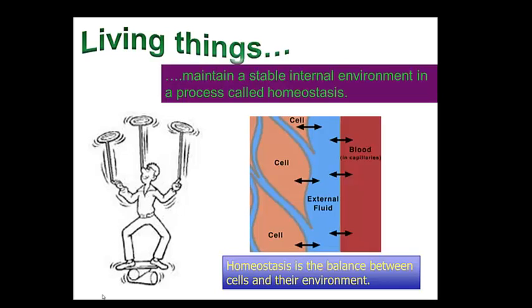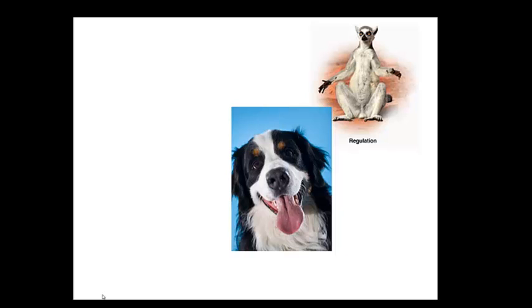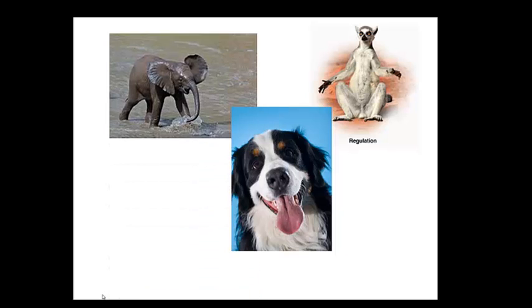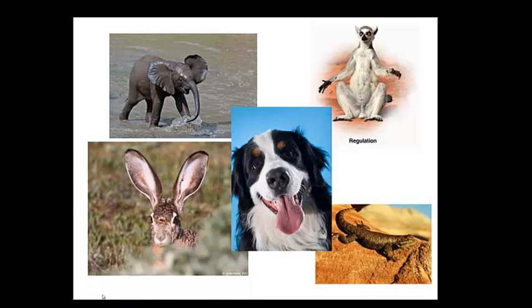Water balance and all of these are regulated to maintain homeostatic balance. Examples are the dog panting, the elephant cooling off, rabbits using their big ears to release heat, and the lizard sunning — all examples of these animals working to regulate body temperature as an example of maintaining homeostasis.